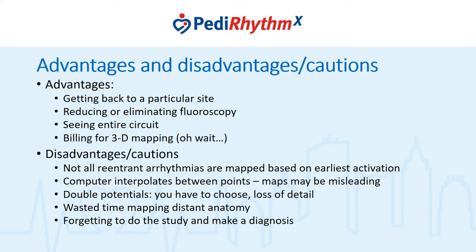There are some disadvantages and cautions that are easy to forget. First of all, not all reentrant arrhythmias are mapped based on earliest activation. Probably the best example is Mahaim pathway tachycardia, where we don't really care what the earliest ventricular activation is because it's well off the AV groove and distant from where the Mahaim pathway is. AV node reentry is another example — earliest activation during AV node reentry is classically going to be at the fast pathway, and that's not our target. Also, the computer program interpolates between acquired points, so if you don't acquire many points, the machine is blending timing between points, and that can be misleading.